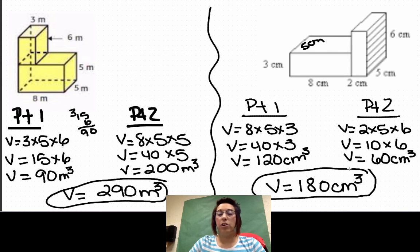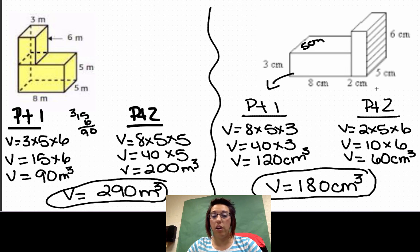The important thing for you to remember when you are working these volume problems with composite solids is that you need to do all of the work. You need to do part one, you need to do part two, and then you need to add them together to get your total answer for the volume of those composite solids.